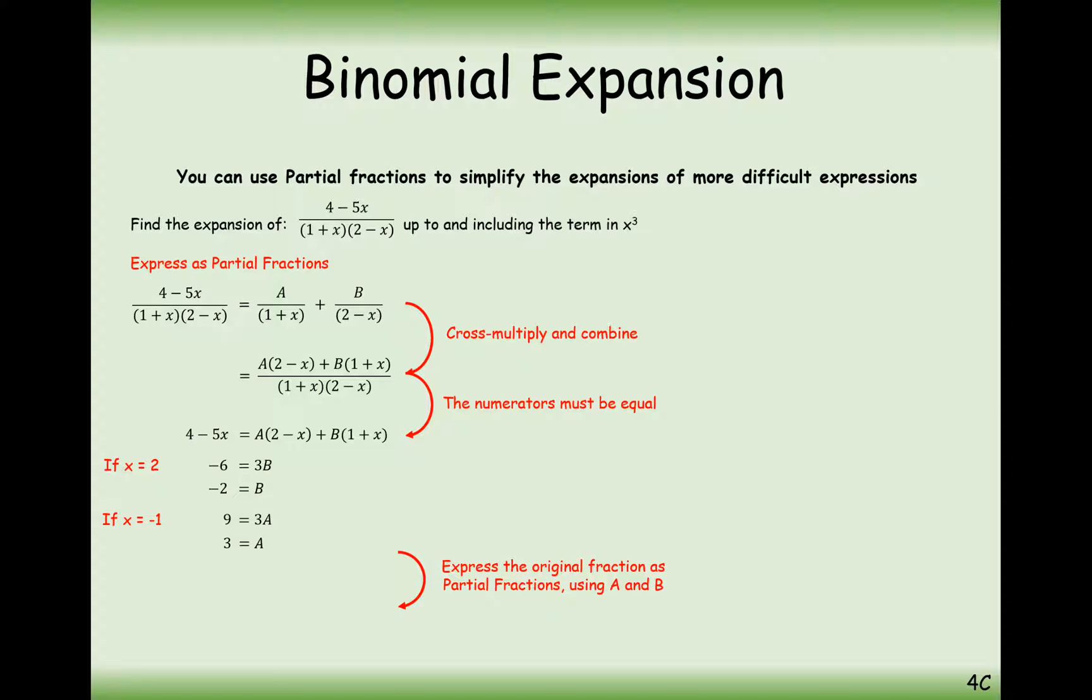So in this case here, the partial fraction for 4 minus 5x over 1 plus x times 2 minus x is 3 over 1 plus x, substituting A back in up here, minus 2 over 2 minus 2x. So if B is a negative, just bring it to the front and replace it with the positive that you've got there.